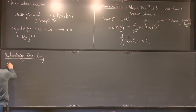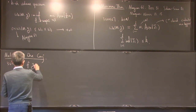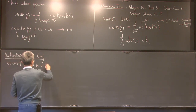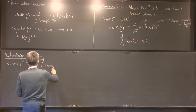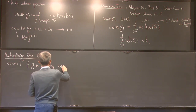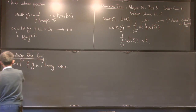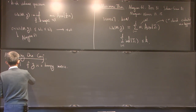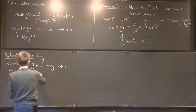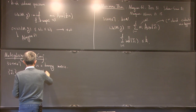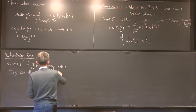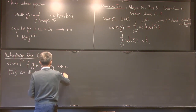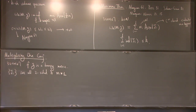Still for regular dimensions, Fernando and André conjecture that if g is a bumpy metric, then the connected components of the min-max minimal hypersurfaces are all two-sided, and the multiplicities m_i are all equal to 1.